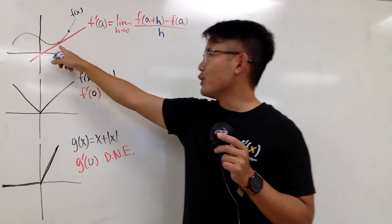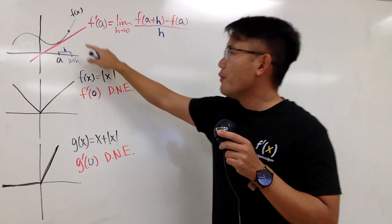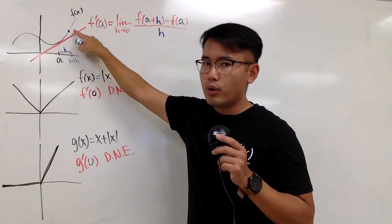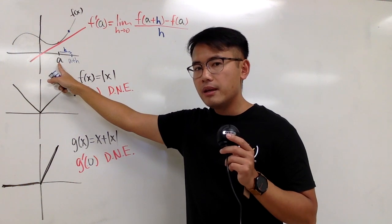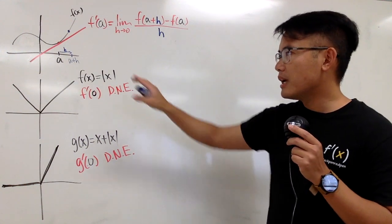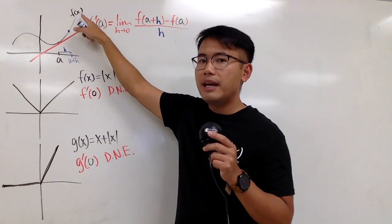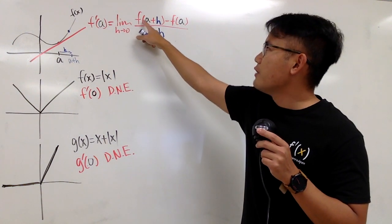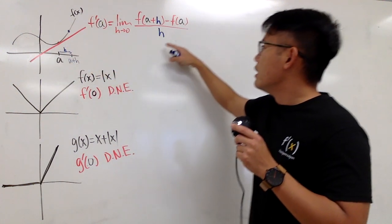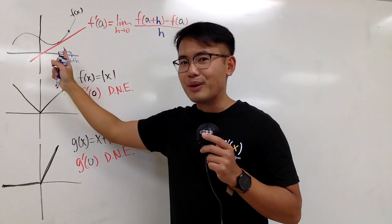Even though we are just given one point, let's pick another point. I will say h is the distance between the x value of the original and the new point. Originally, this has x value a. The new point will have the x value a plus h. Once you have this x value, you can plug it into f to get the y value, which is precisely f of a plus h. You plug a into f to get the y value of the original point, and if you subtract them, you get the difference in the y values over the difference in the x value, which is simply h.